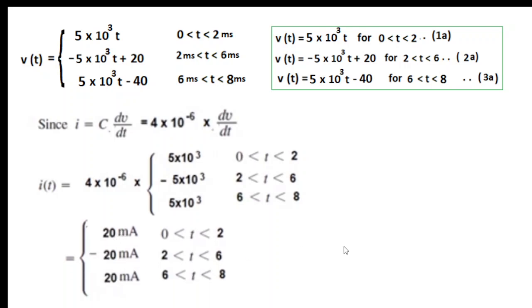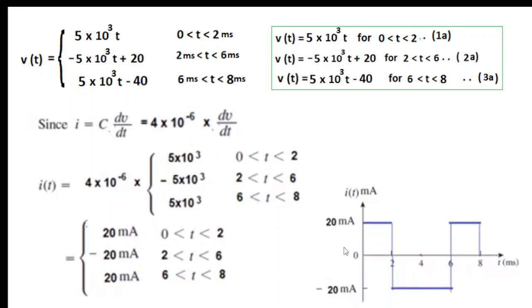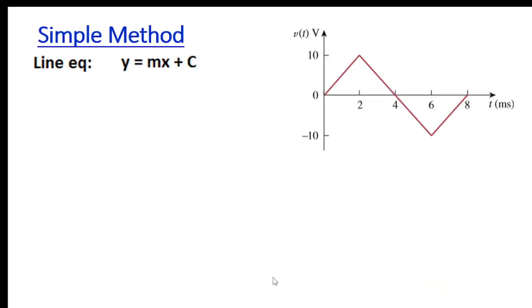Multiplying and simplifying, we get the current values: 20 milliamps for 0 to 2ms, -20 milliamps for 2 to 6ms, and +20 milliamps for 6 to 8ms. We can now easily plot the current waveform. Just to give you an idea, we'll now do another method — I'm calling it the simple method.